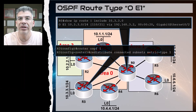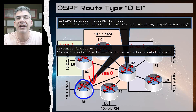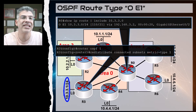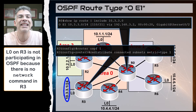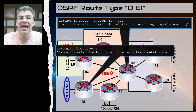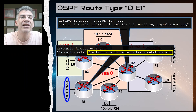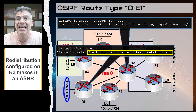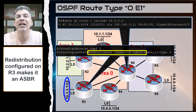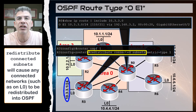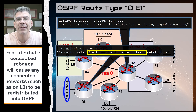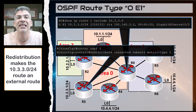In this scenario, R3 has its interface in area 0 and also has a directly connected network on loopback 0, which is the 10.3.3.0/24 network. This network is not participating in OSPF — we don't have an OSPF network command for it. Instead, this network is being redistributed into OSPF, which makes R3 an ASBR. We're using the redistribute connected subnets command, which says any connected networks on any of our interfaces will be redistributed into OSPF. It is this redistribution that makes the route an external route.